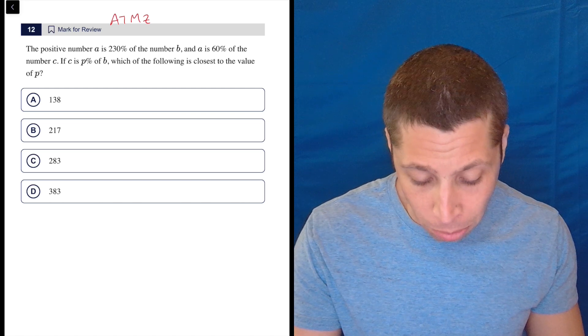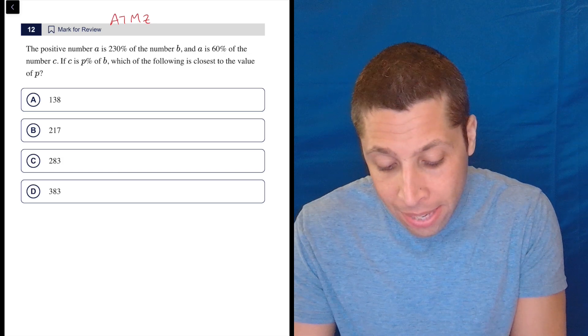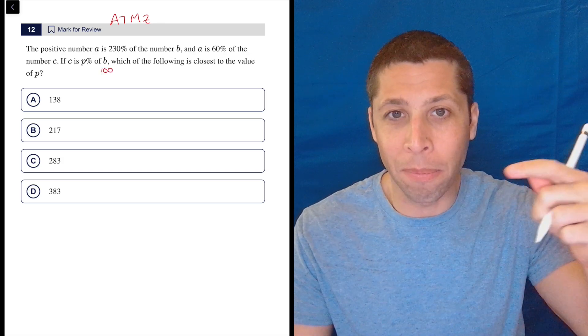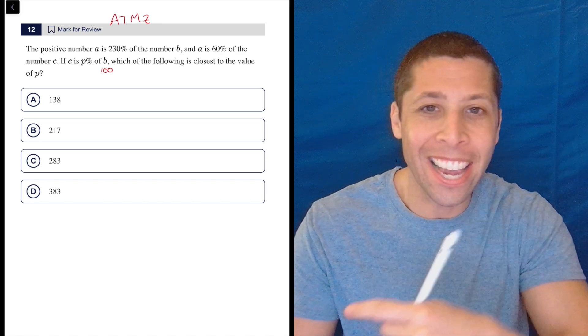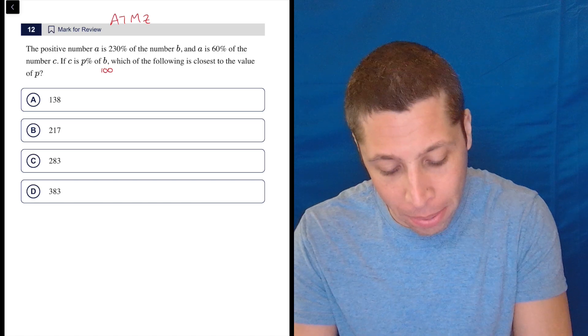So A is 230% of B. A is 60% of C. C is what percent of B? Well, if B is 100, it's going to be very easy to tell at the end what percent of 100 C is because 100 is like our base value for percents anyway. So that's going to be my starting point. I'm going to make B 100.